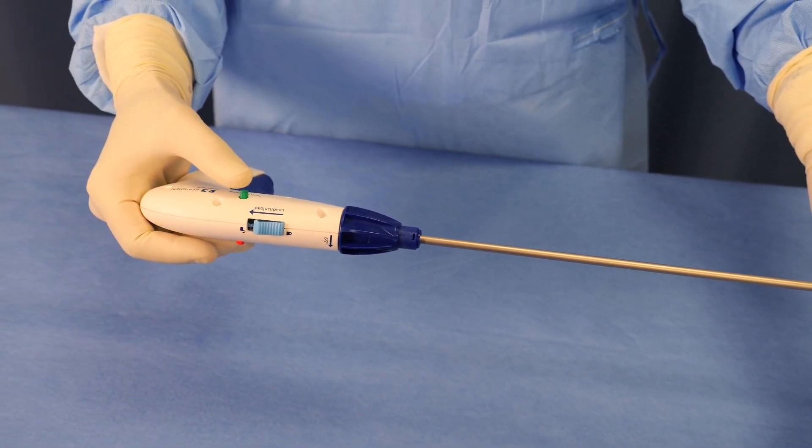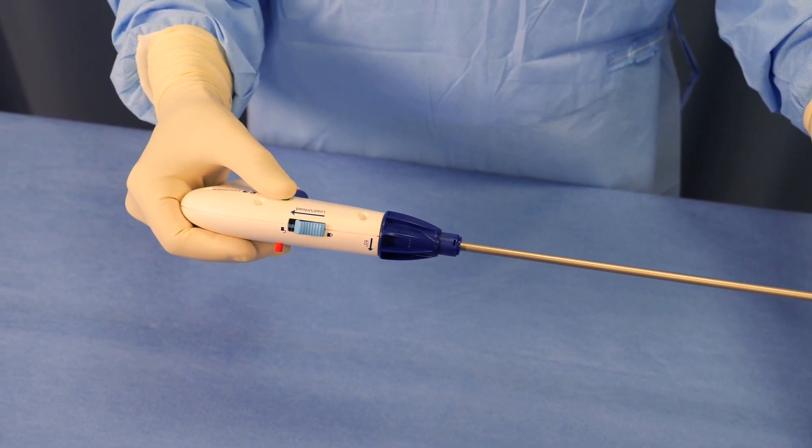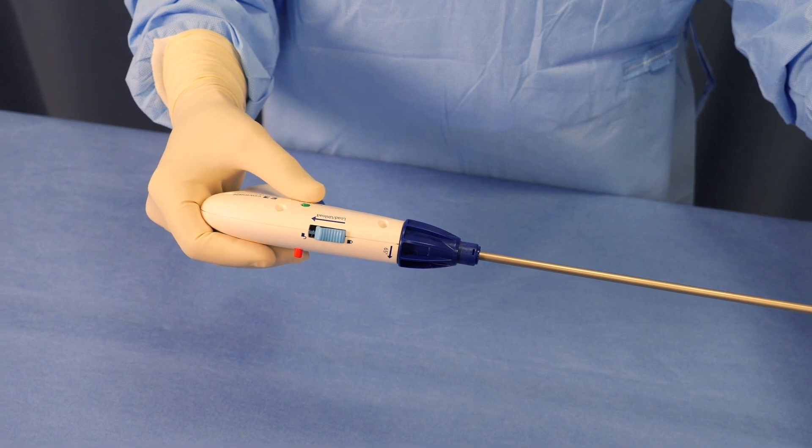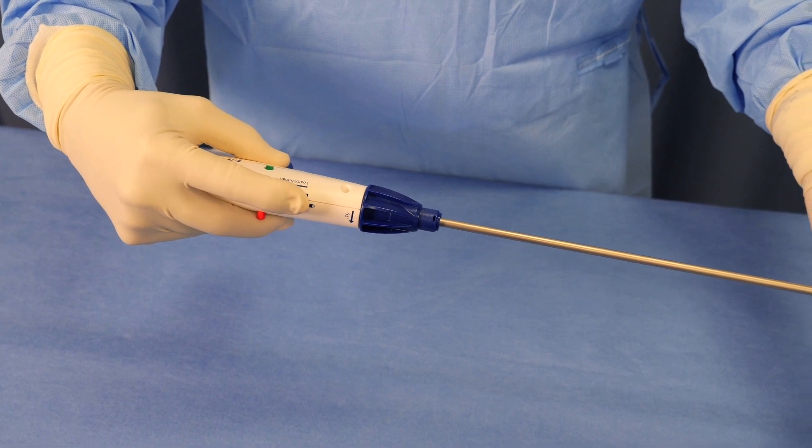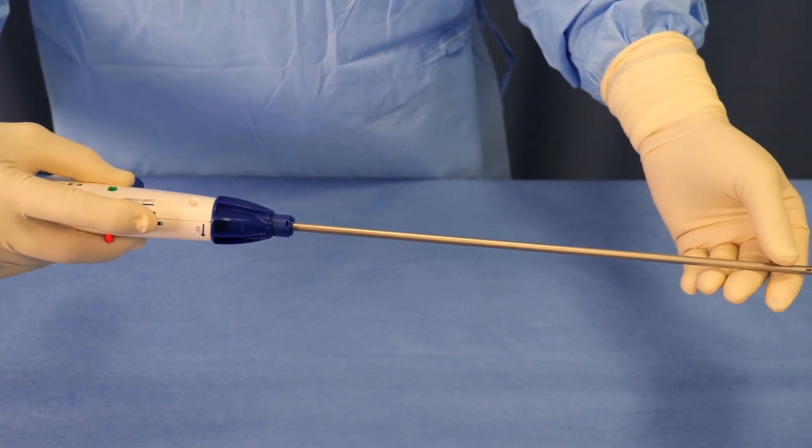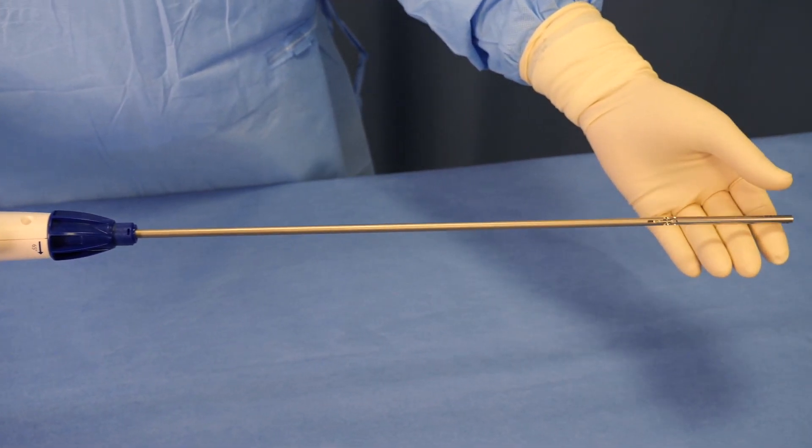Ensure that the device is in the straight, unarticulated position. Then push the left side of the toggle button to expose the red portion of the button. Pull and hold the blue lock switch button located on top of the instrument in the back position. Pull the reload off of the shaft of the device and discard.